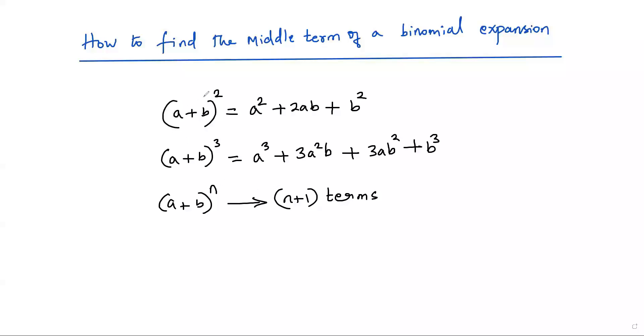If the exponent is two, then the number of terms in the expansion will be three. If the exponent is three, then the number of terms in the expansion will be four.